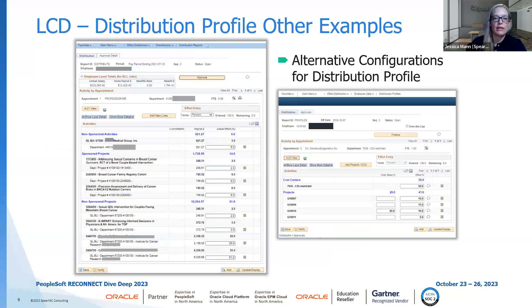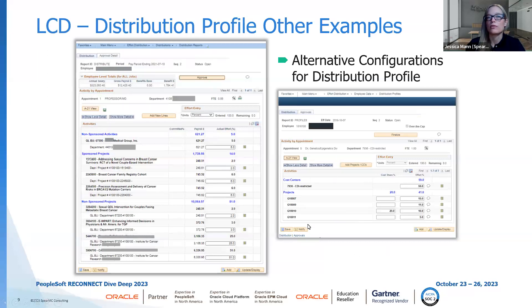Here are a couple more examples of what a distribution page might look like. The one on the left has three groupings of time: non-sponsored activities going to a department, sponsored projects, and projects that are not externally funded. The one on the right is simpler — just a couple of groupings showing the actual project ID. What a person sees as they go into the page is also configurable — whether they see dollars or just percent efforts.